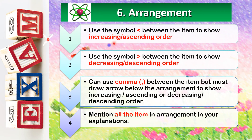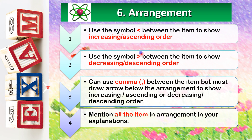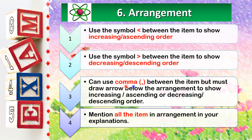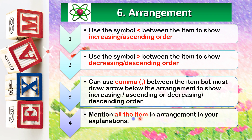Here is the correct technique to answer questions that involve an arrangement. You can use the symbol of 'less than' between items to show increasing or ascending order. You can use the symbol of 'greater than' between items to show decreasing or descending order. Another option is to use a comma between items, but you must draw an arrow below the arrangement to show either increasing or decreasing order. Lastly, you must mention all the items in the arrangement in your explanation.